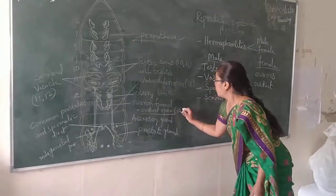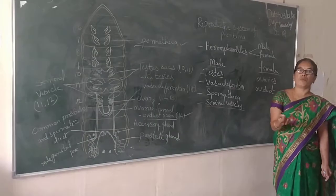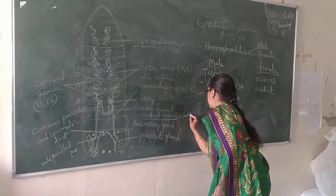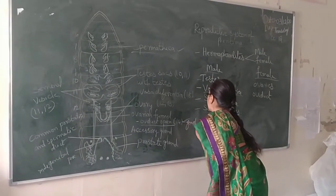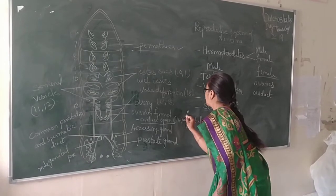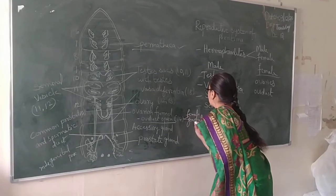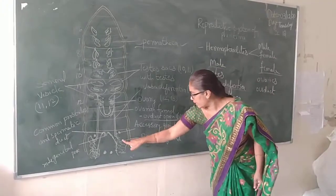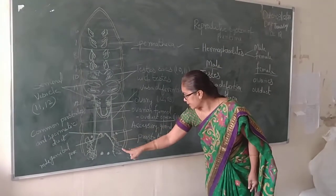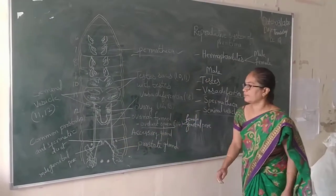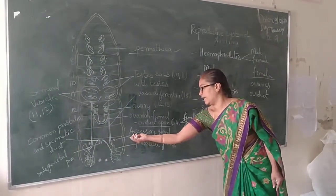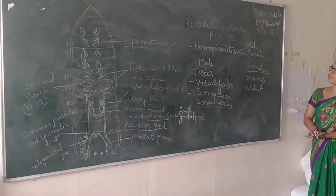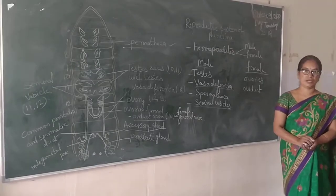At the 14th segment, the Oviduct opens outside through the female genital pore. And in the 17th and 19th segments, they contain the accessory glands. This is about the reproductive system of Ferritima. Thank you.